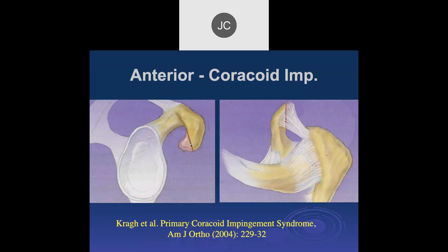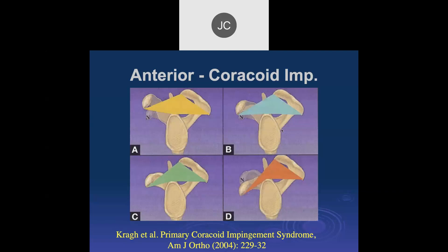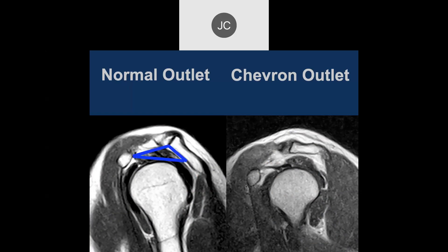Anterior or coracoid impingement occurs where a prominent coracoid process tip extends toward the glenohumeral joint space. The normal coracoid process should be relatively superior — at or above the level of the superior glenoid. When it's below and especially prominent, there is increased risk for anterior impingement. One approach is to draw a diagram: when the angle at the coracoid relative to the AC joint and humeral head becomes significantly less than 180 degrees — the chevron sign — impingement risk increases.